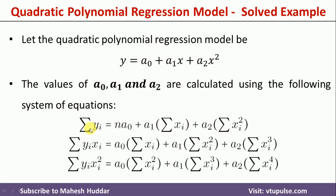The first equation involves the summation of y — we have been given the y column, the dependent variable, and we calculate its summation, which is equivalent to n times a0, where n is the number of data points. In this case, n equals five. Then a0 plus a1 multiplied by summation of xi, plus a2 multiplied by summation of x squared. We first calculate x squared and then its summation.